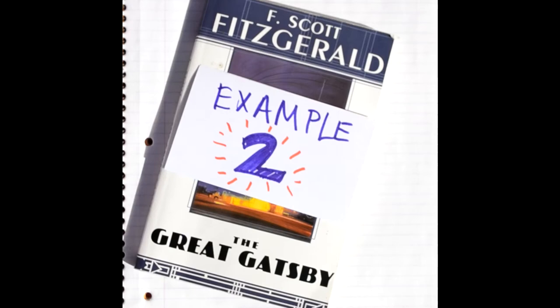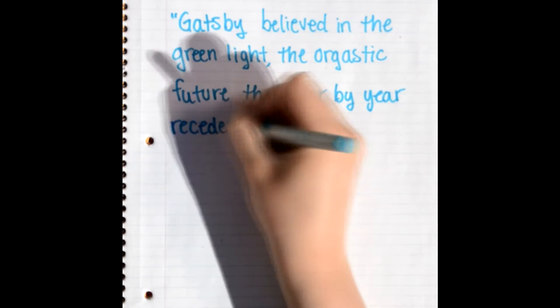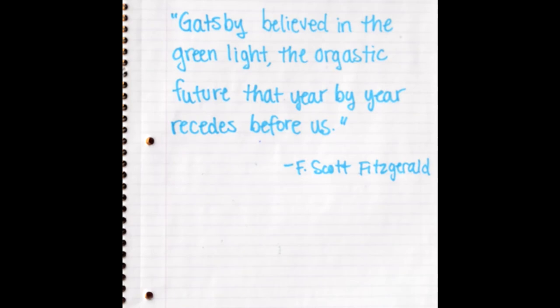For our second example, let's examine one of the very last passages of that same book. It reads, Gatsby believed in the green light, the orgastic future that year by year recedes before us. Let's look at that passage again and try to analyze it.